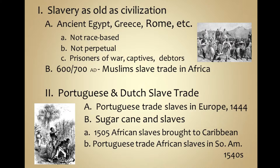Europeans won't get involved in the slave trade until the early 1400s, when the Portuguese made their voyages down the west coast of Africa and claimed several islands in the Atlantic Ocean where they started planting sugar cane and profiting from the sale of sugar. They took slaves from Africa to work on those sugar plantations on these Atlantic islands.